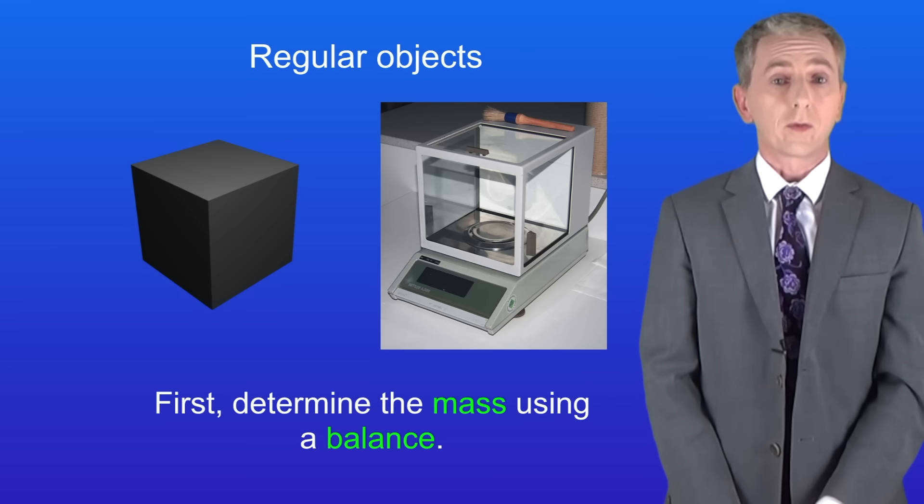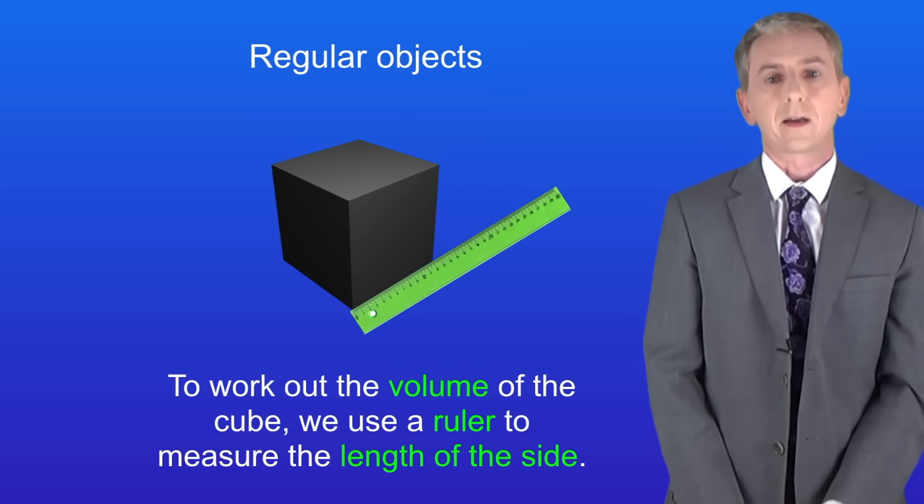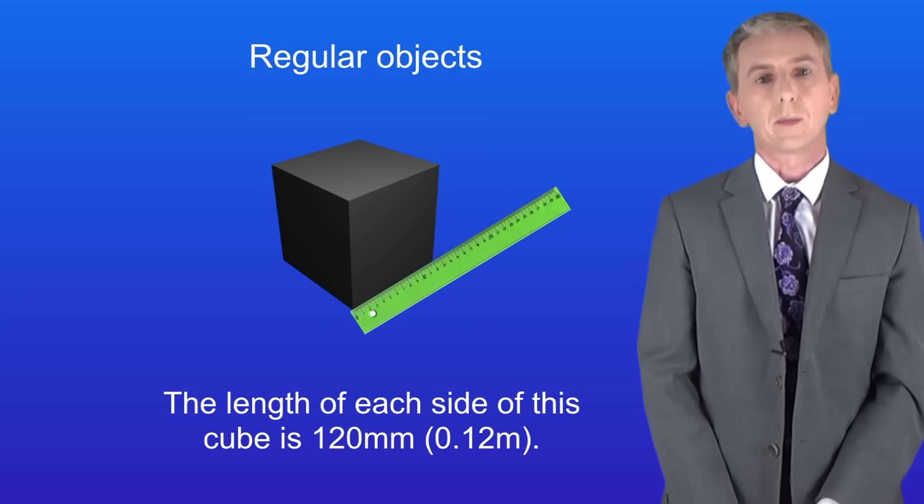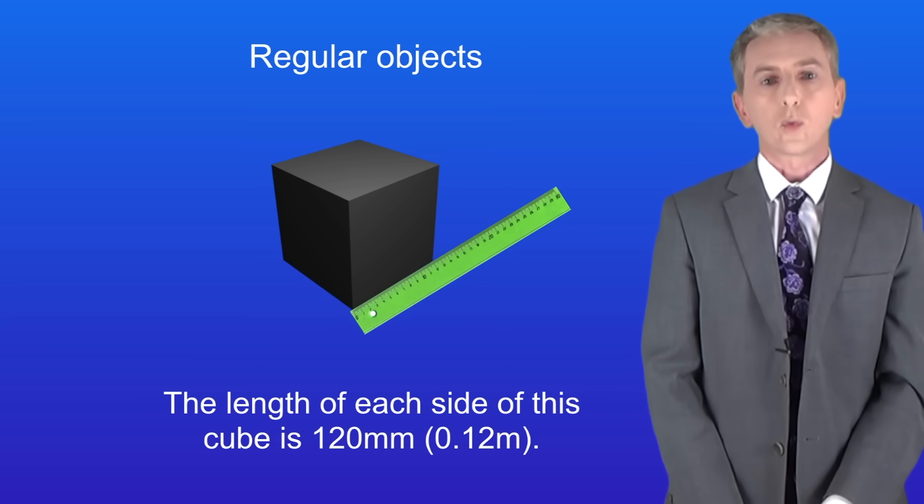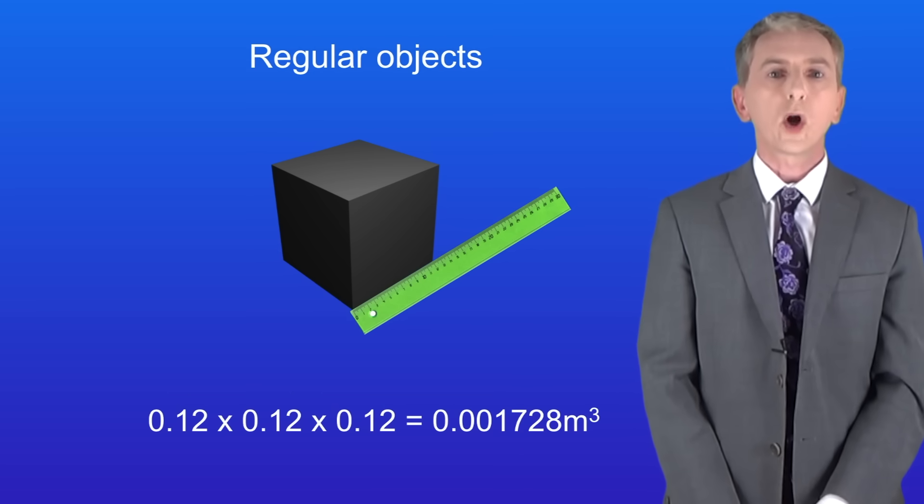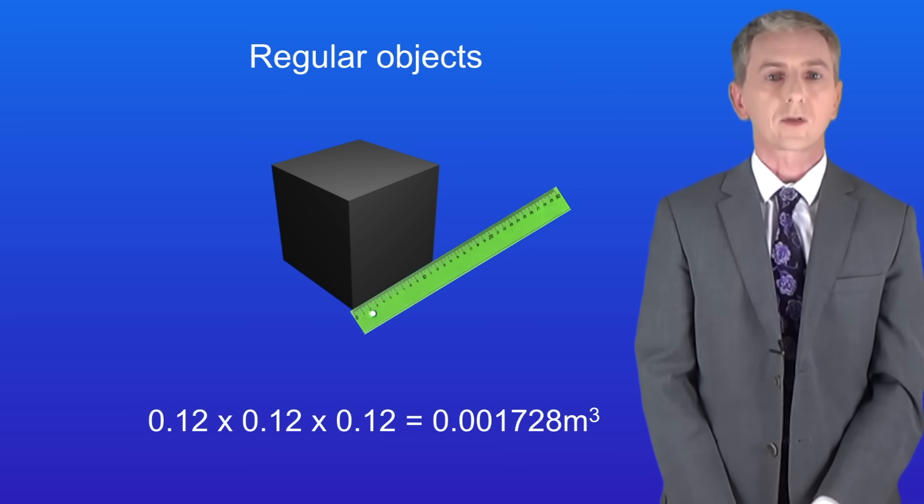Now we need to work out the volume of the cube. To do that we use a ruler to measure the length of the side like this. The length of each side of this cube is 120 millimeters, in other words 0.12 meters. The volume equals the length of the side cubed. So 0.12 cubed gives us a volume of 0.001728 meters cubed.